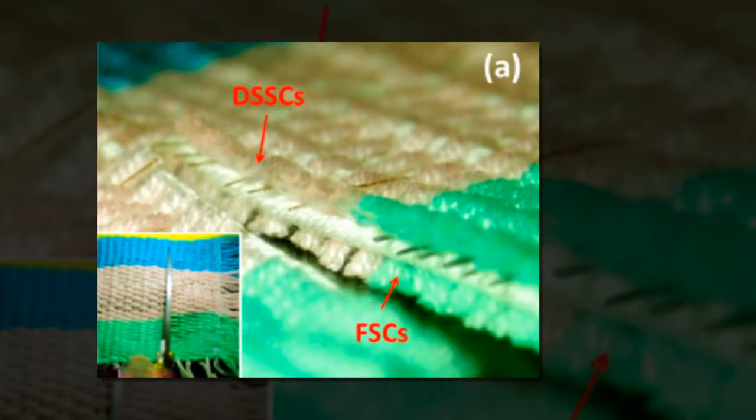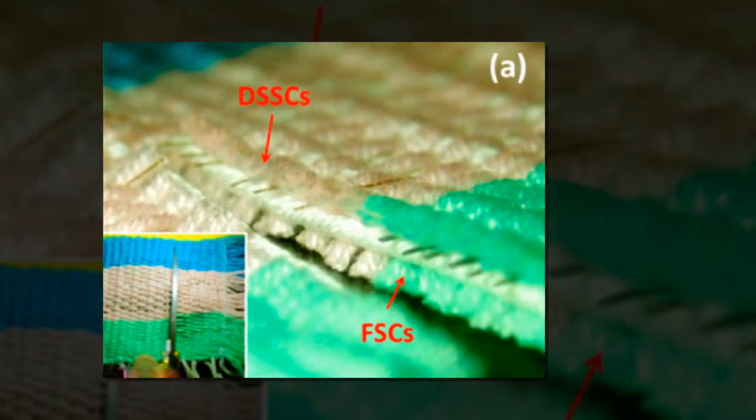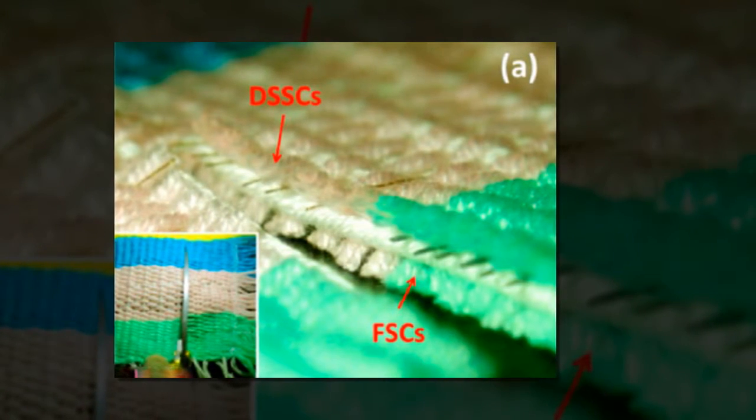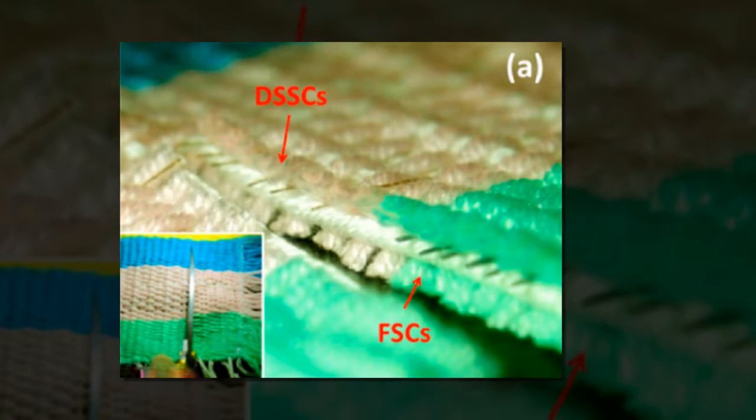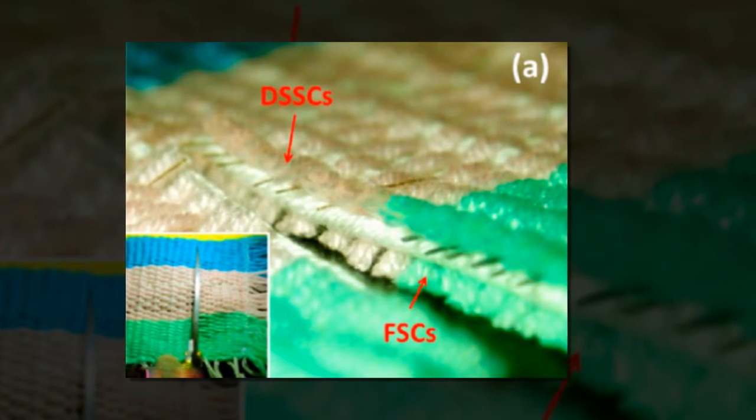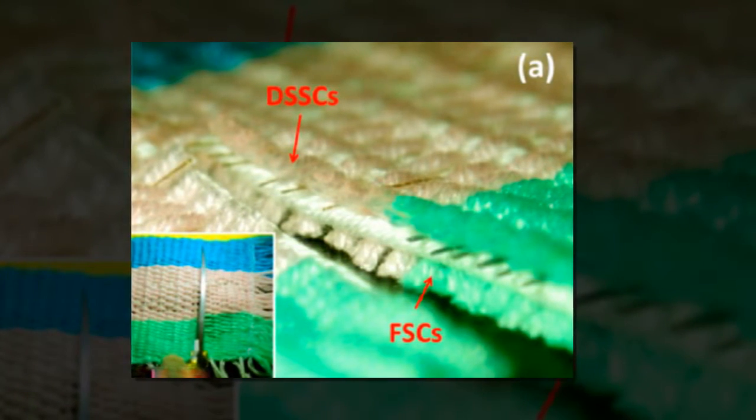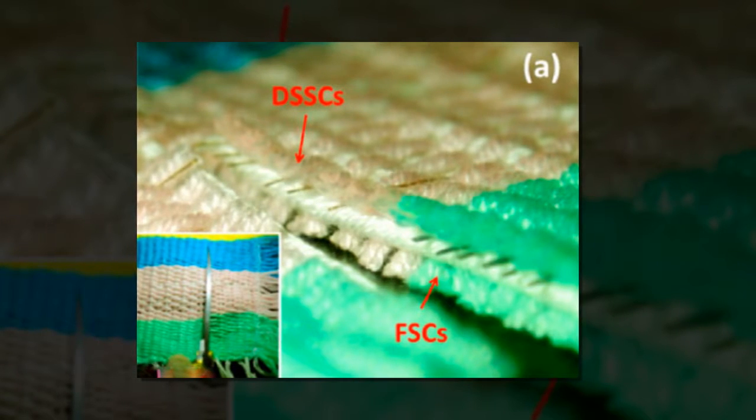The researchers created two different types of fiber. One containing titanium or a manganese-coated polymer along with zinc oxide, a dye and an electrolyte. These were interlaced with copper-coated polymer wires to create the solar cell section of the material.